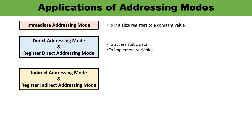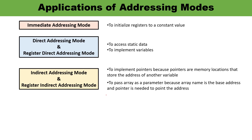Next is indirect addressing mode or register indirect addressing mode. Here, the content of registers specifies the address of the operand in memory. These addressing modes are used to implement pointers, because pointers are memory locations that store the address of another variable. They are also used to pass an array as a parameter, because the array name is the base address and a pointer is needed to point to the address.